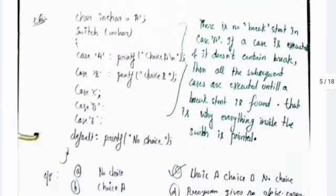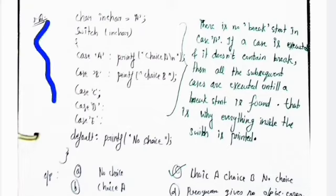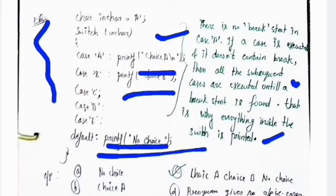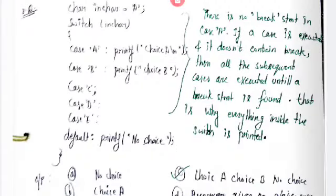Question 8 uses a switch-case with char in_care equals 'a'. Cases are a, b, c, d, and e with no break statements — break is optional. If case 'a' is executed without break, all sequential cases execute until a break is found, so everything inside the switch is printed. Options are: A: no choice, B: choice a, C: choice a, choice b, no choice, D: no output/error. Option C is correct.